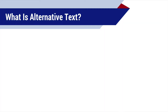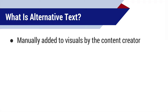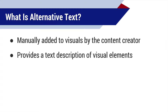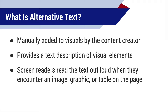But first, let's start by defining what alternative text is. When you create content that provides information through visuals, alternative text is a description that you need to add in order to ensure that people who can't see those visuals can still access the information. This text description of the visual elements usually does not appear on the page for everyone to see. Instead, a screen reader will read it out loud when it encounters an image, graphic, or table on the page.